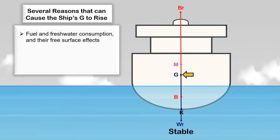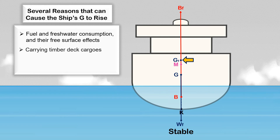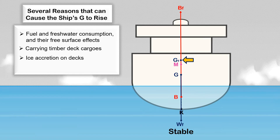First, fuel and freshwater consumption and their free surface effects. The effect of fuel and water consumption is a discharge of weight — if the tanks are below the ship's G, this will cause a rise in the ship's center of gravity, with the additional effect of free surfaces as tanks become partially filled. Second, ships carrying timber deck cargos: this type of cargo absorbs moisture, causing the ship's G to rise — a 15% allowance for the weight of timber should be made when carried on deck in stability calculations. Third, ice accretion on deck: sailing in higher latitudes can result in the accretion of ice on deck, raising the ship's G above the metacenter. Fourth, the shift of bulk cargo: the vertical component of a shift of solid bulk cargo may be enough to cause a rise in the ship's center of gravity.